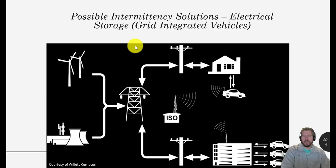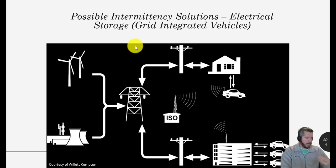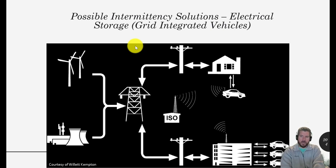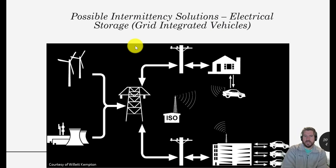Now we're going to talk about one more intermittency solution that's not widely employed yet. A lot of the ones I mentioned before are already used, maybe not at large scale. This one has pilot projects being run throughout the globe. The technology is called vehicle-to-grid, and the vehicles themselves are called grid-integrated vehicles.